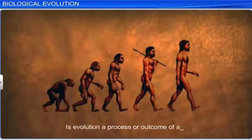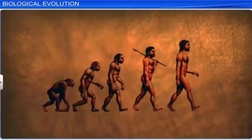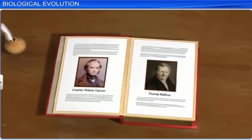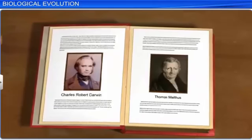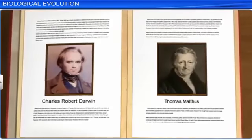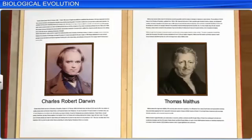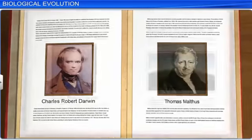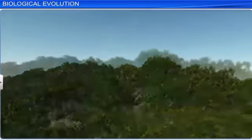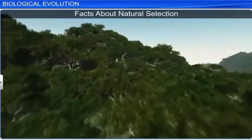Evolution has always generated a lot of debate. In fact, no one has been able to say with certainty whether evolution is a process or an outcome of a process like natural selection. Around the time when Darwin proposed the theory of evolution, a British scholar and economist Thomas Malthus propounded his influential theories about population and the factors that lead to its increase and decrease. Malthus's thoughts impacted Darwin, and he concluded that natural selection in population was also based on certain facts. For example, natural resources are limited.